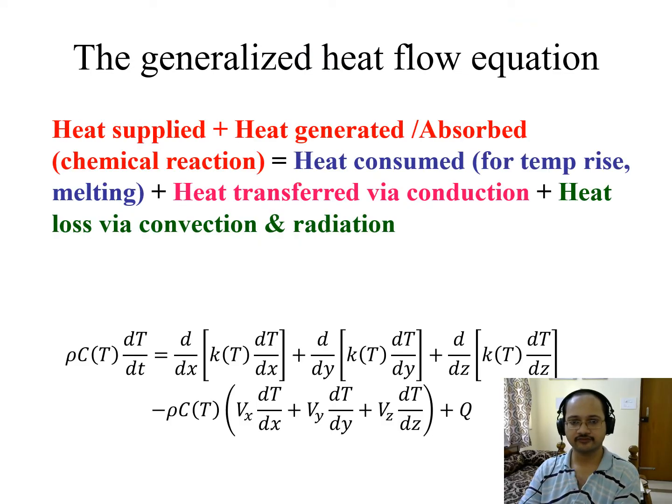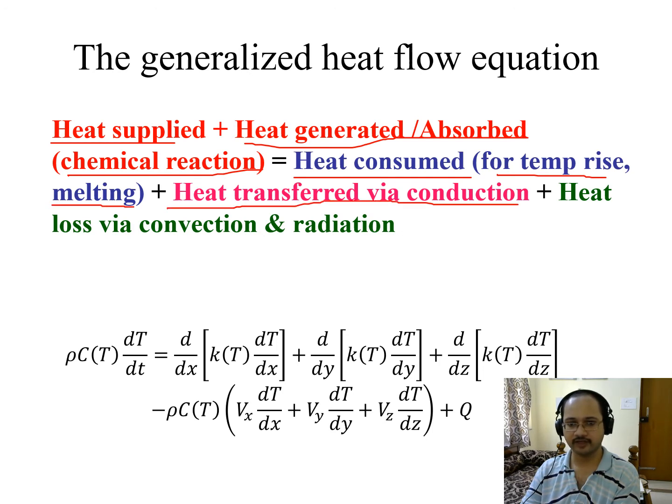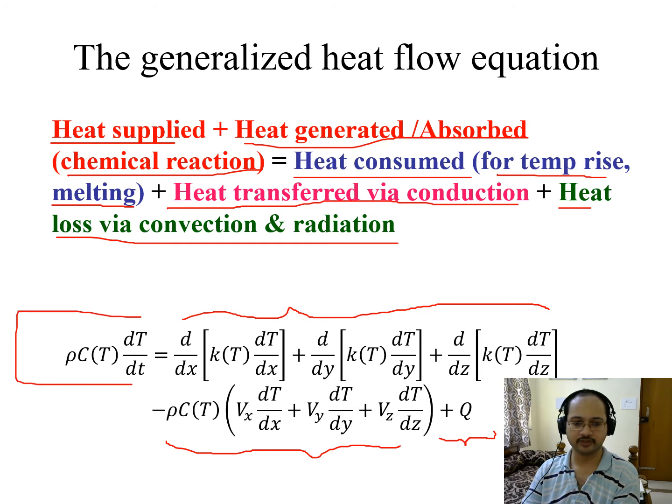The generalized heat flow equation. It's a typical Fourier heat conduction equation. The heat supply plus heat generated or heat absorbed due to chemical reaction is equal to heat consumed for temperature rise as well as melting, plus heat transferred via conduction, plus heat loss via convection and radiation. You can see the heat conduction, the various ways the heat is conducted and the additional heat loss. And this is the amount of heat absorbed or generated.